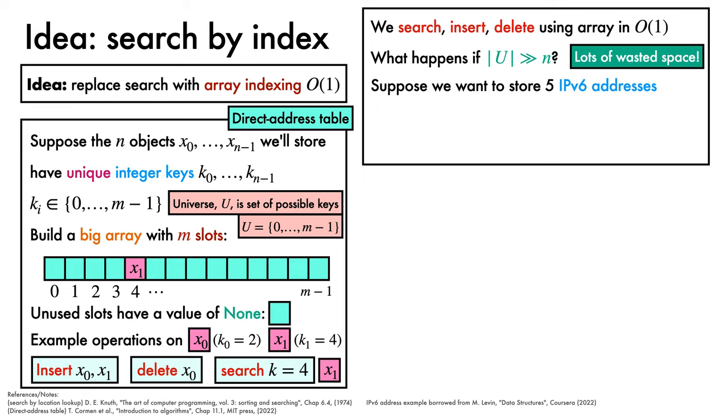To make this concrete, suppose we want to store the five IPv6 internet addresses of our closest friends, a very normal thing to do, and we choose to put them in a direct address table. Since IPv6 addresses use 128 bits, our universe now contains 2 to the power of 128 possible values. Somewhat inconveniently, this means that our direct address table, to keep track of our friends' IP addresses,